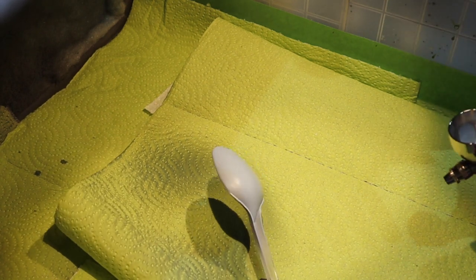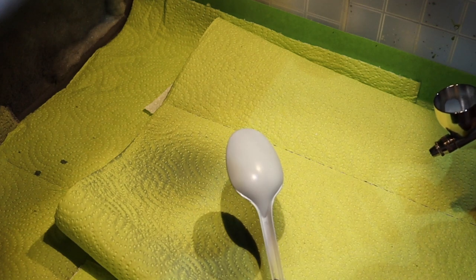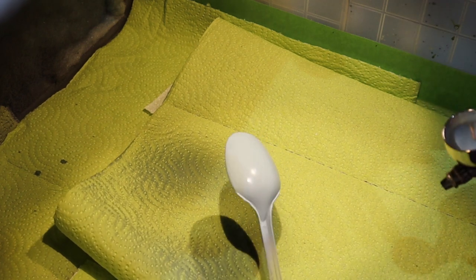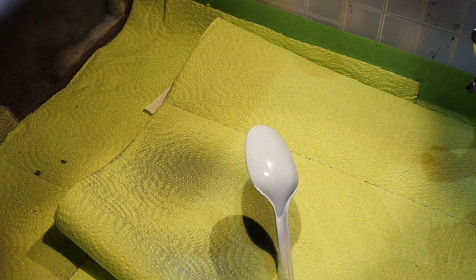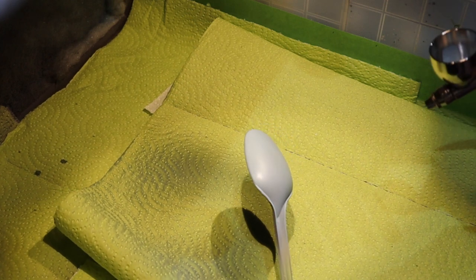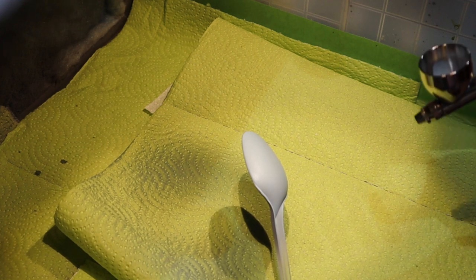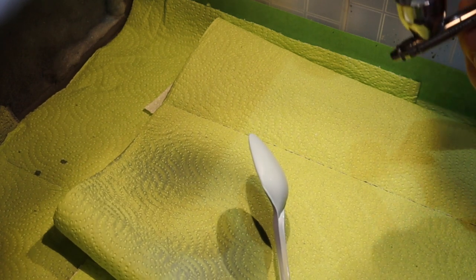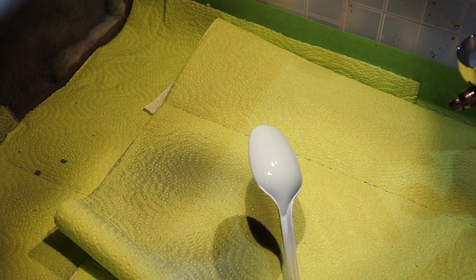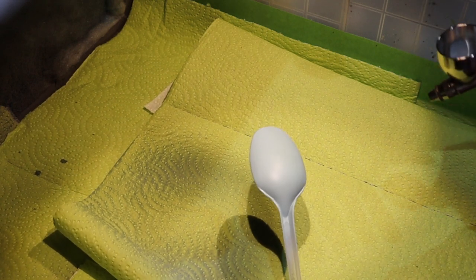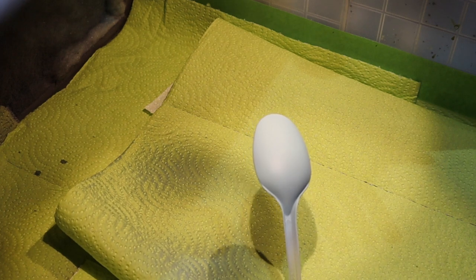So you can see the first coat has gone down. Quite nice coverage to start with. But it does need another coat. Again, going to blow some air over it just so we can get it dry so you can see the finished effect. A little bit of touch up here and there. As you can see, the paint has gone down nicely. Got to build up the colour a little bit, but a nice finished product.